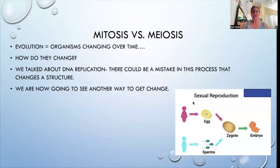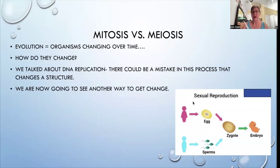We talked about DNA replication and how there could be mistakes. If there are mistakes in copying that DNA, those mistakes could lead to changes as well. So there are all kinds of different avenues for organisms to change over time. One is mutation. One is recombination and how we can mix up our different types of genes. And then the other one would be natural selection — which set of characteristics are more successful than others.